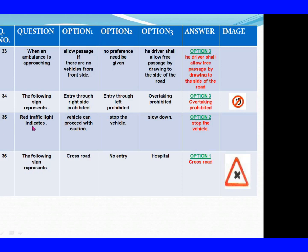Question 35: Red traffic light indicates. Option 1: Vehicle can proceed with caution. Option 2: Stop the vehicle. Option 3: Slow down. The right answer is Option 2: Stop the vehicle. Question 36: The following sign represents. Option 1: Crossroad. Option 2: No entry. Option 3: Hospital. The right answer is Option 1: Crossroad.